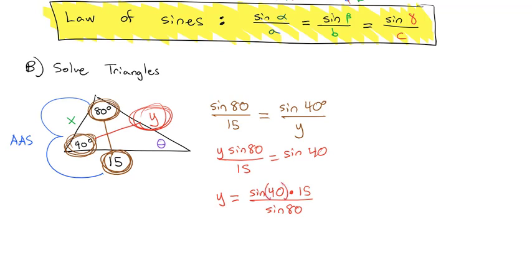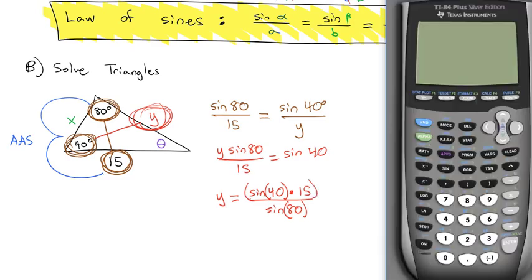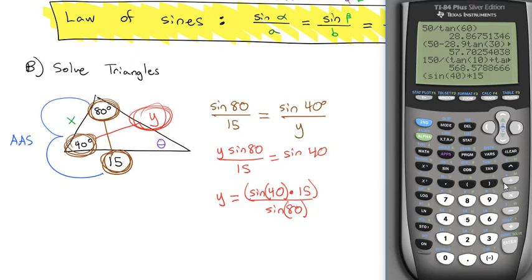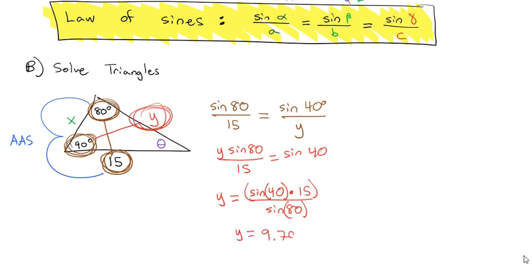When we type this in our calculator, we'll be careful to put parentheses around the sine. With parentheses around the numerator: open parentheses, sine of 40, close parentheses on the sine, times 15, close parentheses on the numerator, divided by sine of 80, close parentheses on the sine, and hit enter. We find out our first missing side, y, is 9.79.